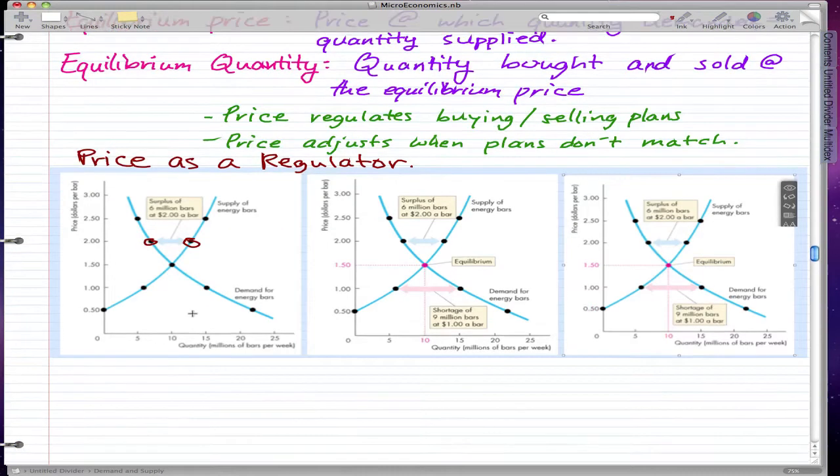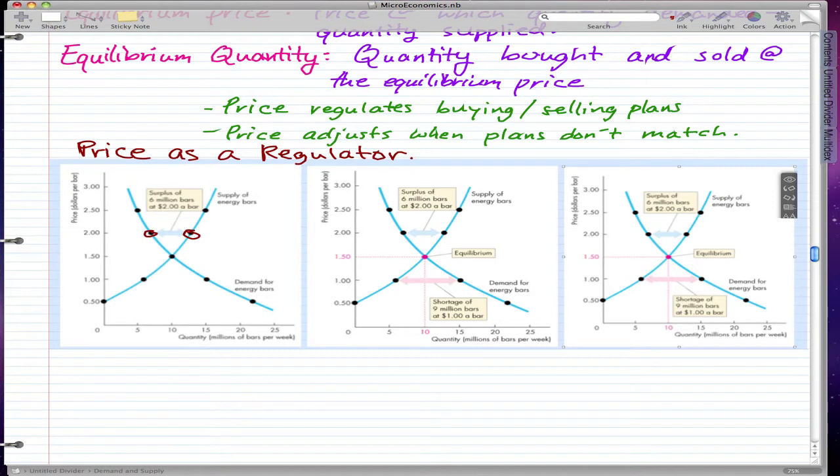Now when we have supply greater than, or when we have the quantity supplied exceeding the quantity demanded, that is called a surplus. That means the price is higher than the equilibrium. Our equilibrium price is actually $1.50, but we're selling at $2. So our price is too high. What happens when the price is too high is the quantity supplied (QS) is greater than the quantity demanded (QD).